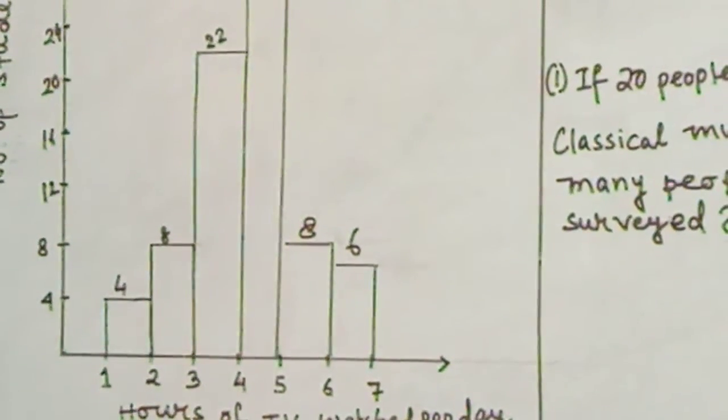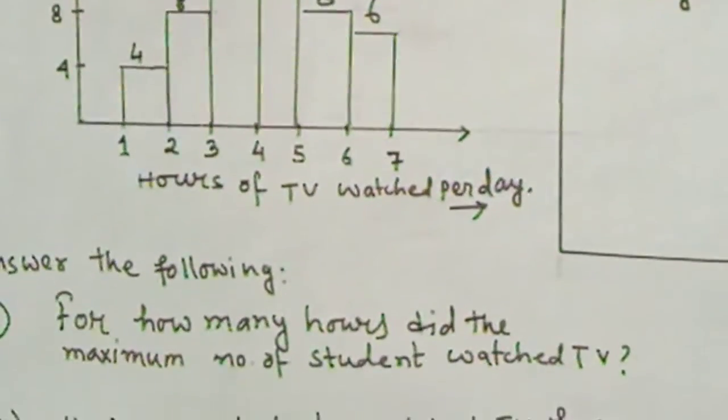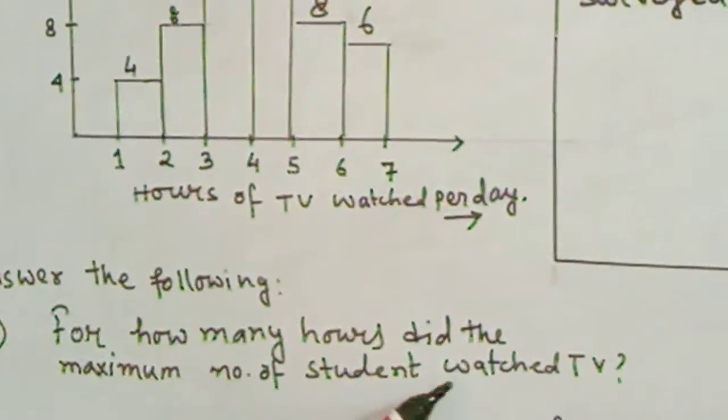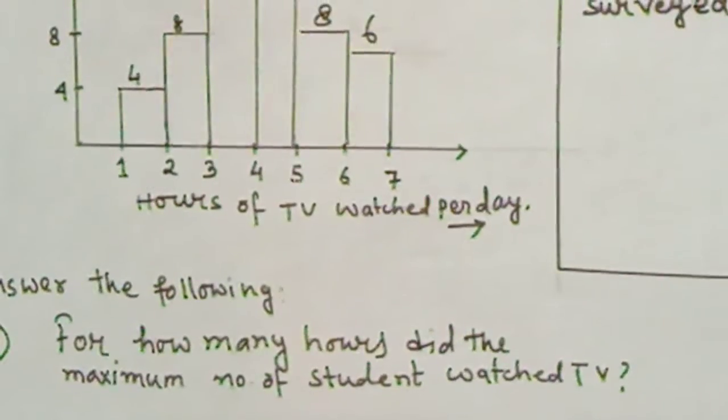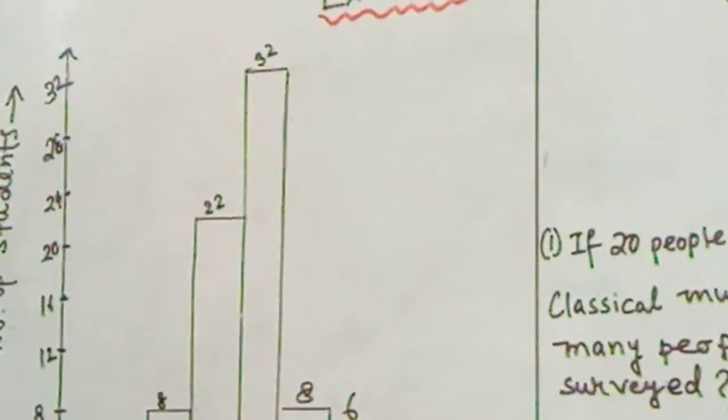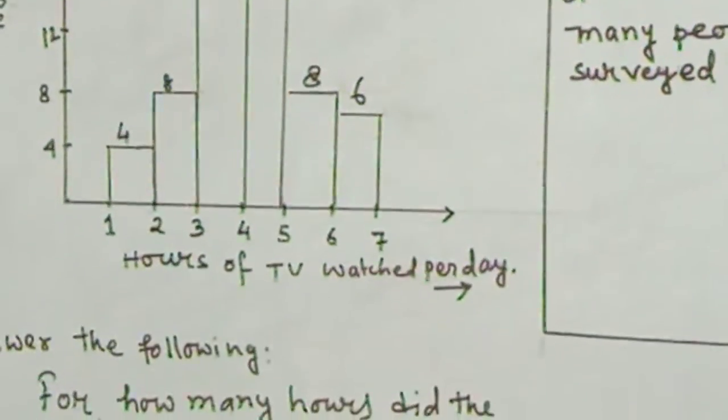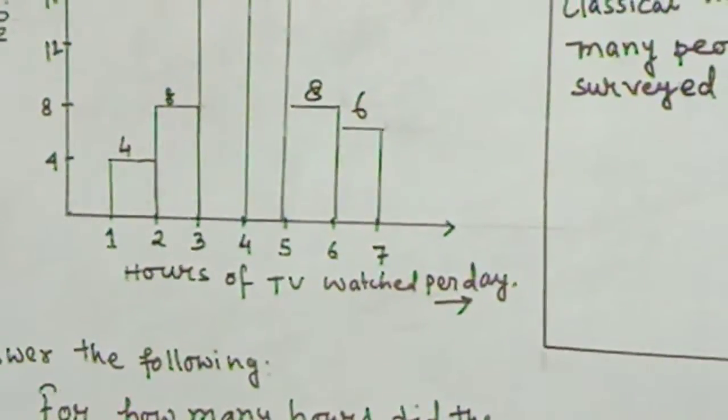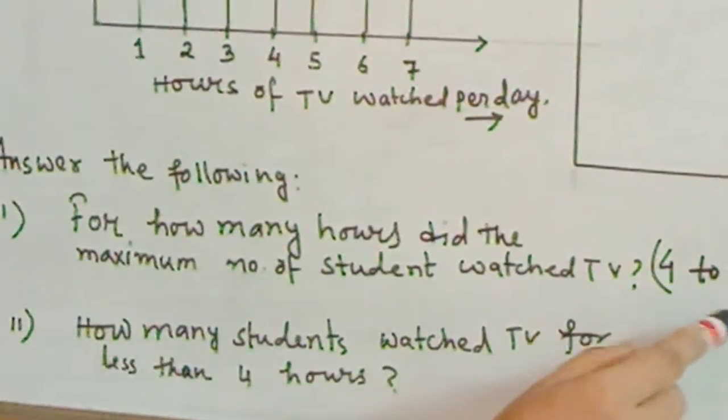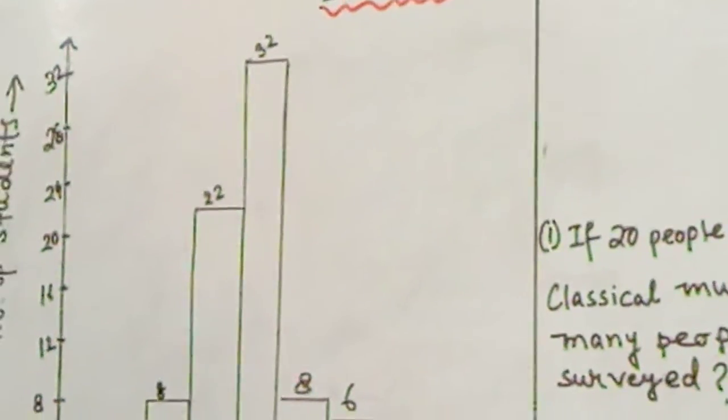After watching this bar graph, you have to give the following answer. For how many hours did the maximum number of students watch TV? The maximum number of students, 32 students, are watching TV 4 to 5 hours. So the answer will be 4 to 5 hours.